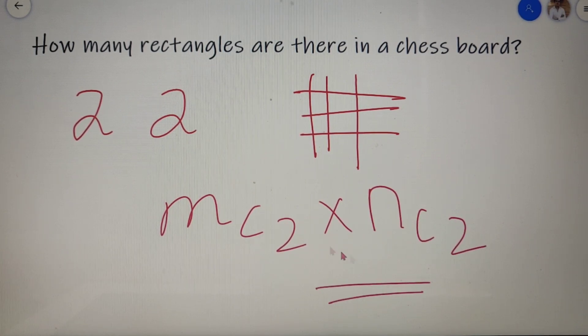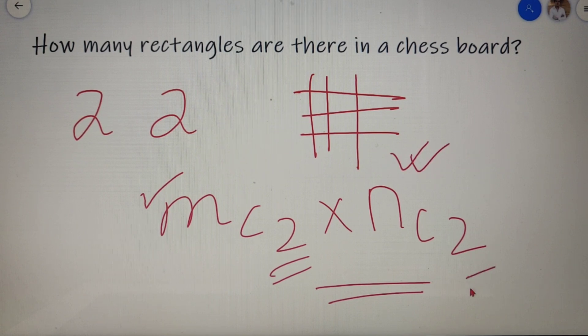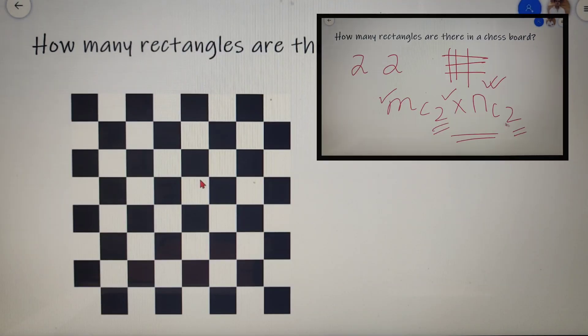Now we have got this formula because out of m horizontal lines we have to choose two, and out of n vertical lines we have to choose two lines, and both the events are dependent on each other. That's why the multiplication sign is applied. So this is how we get the formula as mC2 into nC2.